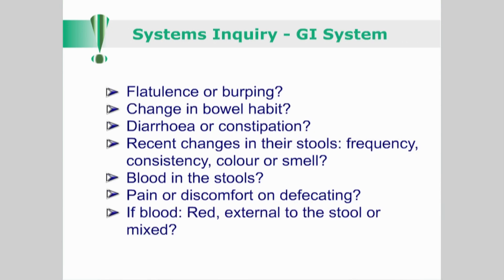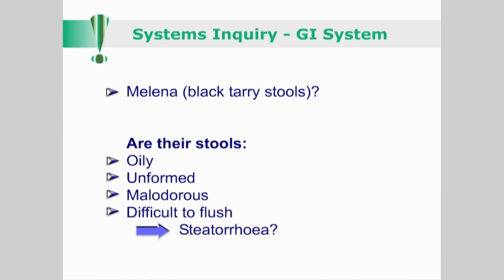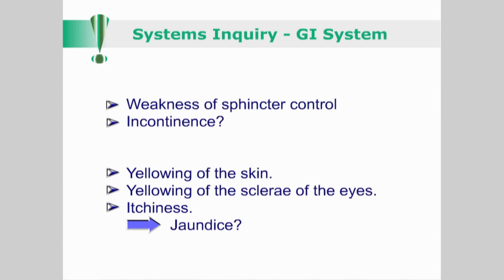Do they complain of flatulence or burping? Have the patient's bowel habits changed recently? Do they have diarrhoea or constipation? Has there been any recent changes in their stools including frequency, consistency, colour or smell? Is there any blood in the stools, or pain or discomfort with defecating? If blood is present, is it bright red, external to the stool or mixed? Do they have melena, that is black tarry stools? Inquire if their stools are oily, unformed, malodorous and if they are difficult to flush — is this steatorrhea? Do they have any weakness of sphincter control or incontinence? Is there any yellowing of the skin or the sclera of the eyes and itchiness indicating jaundice?